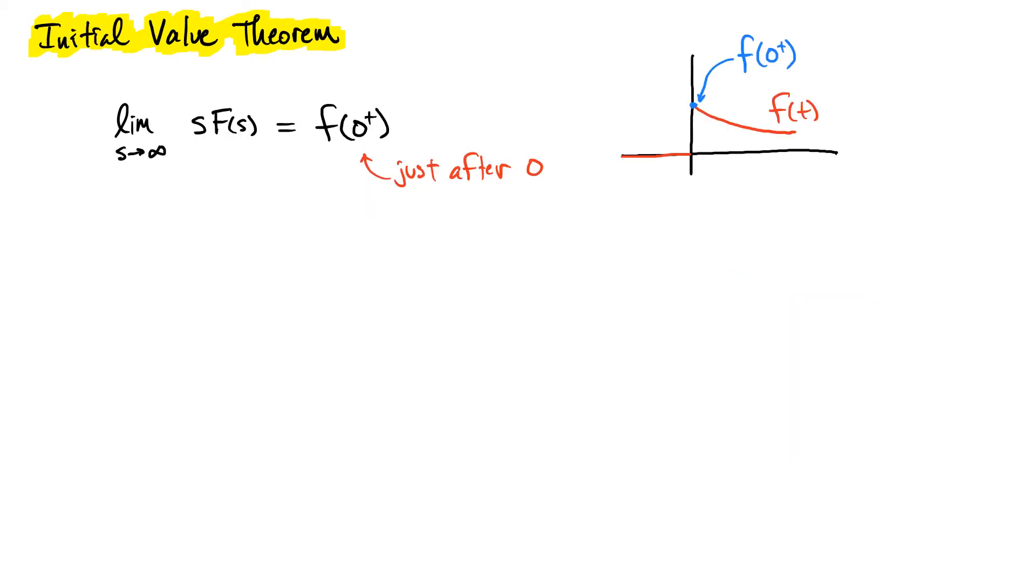There is a similar result, the initial value theorem, that provides information about the function, the time domain function, close to zero based on the Laplace transform. In this case, we're evaluating the limit as s goes to infinity of the product s times the Laplace transform, and that gives us information right after t equals zero of the original time domain function. This just after zero is important because a number of times we'll be looking at forcing functions that use this delta function, which gives this instantaneous boost, and it's indistinguishable between a delta function and an initial condition sometimes. In this case, that information is encoded in essentially the value of that function just after t equals zero.